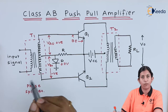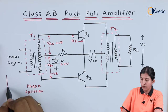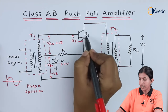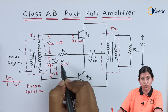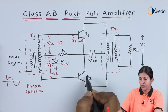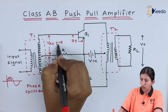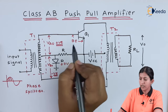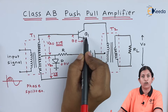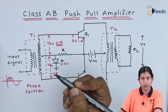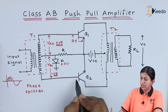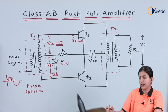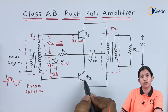When we apply the positive half cycle, since we apply 0.7 volts both transistors will be on. But when VAO is positive and VBO is negative, the positive voltage is applied to the base-emitter of Q1, so Q1 will be more forward biased. As the negative voltage is applied to Q2, it will be reverse biased. So transistor Q1 is on and transistor Q2 will be off.